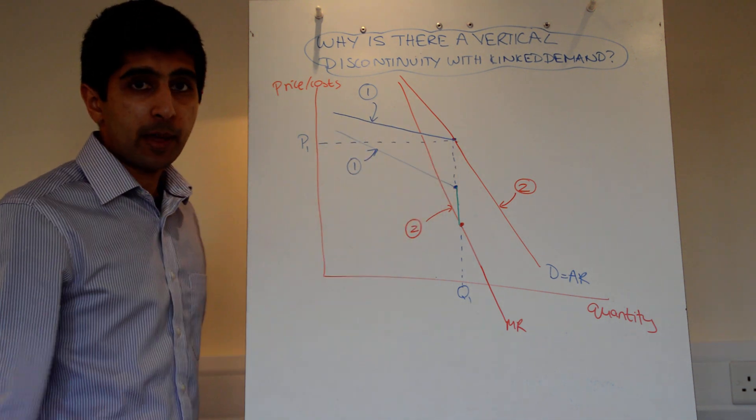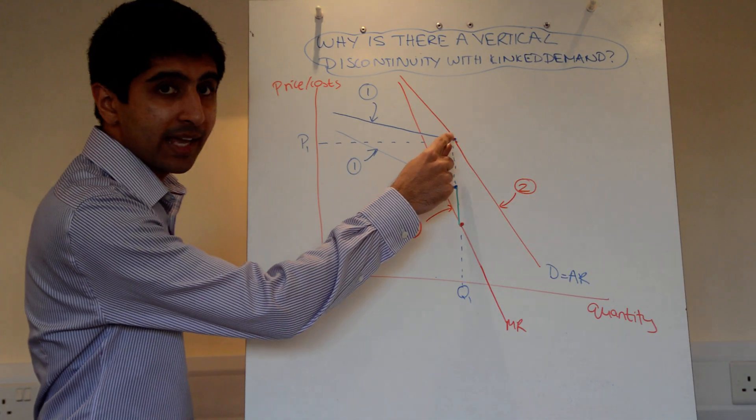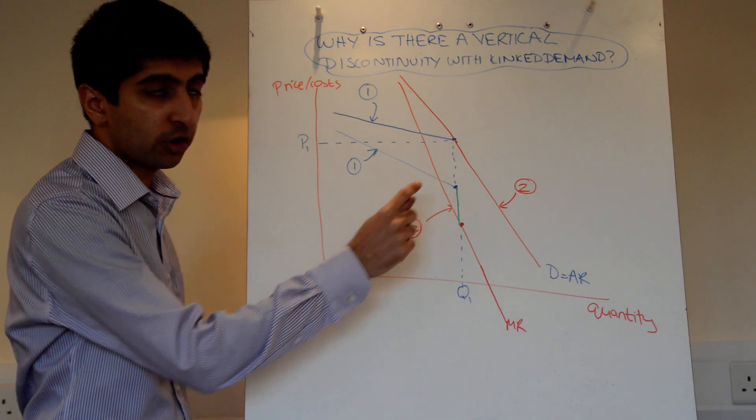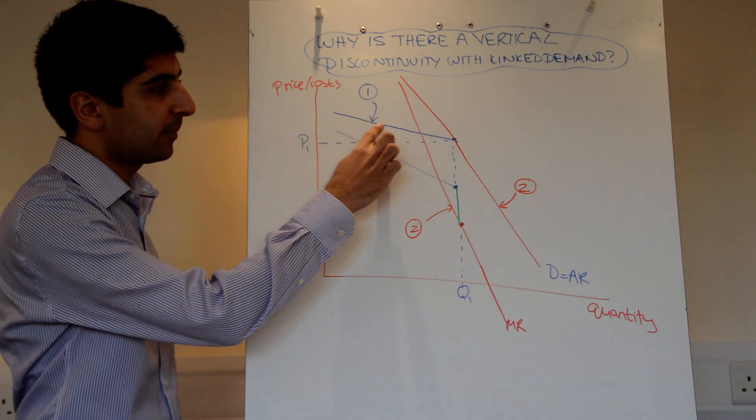Well, we start off with the blue demand curve. So the corresponding marginal revenue curve is going to be twice as steep up until the kink, which is where this blue dot is. Up until that kink, we are now forgetting this demand curve,